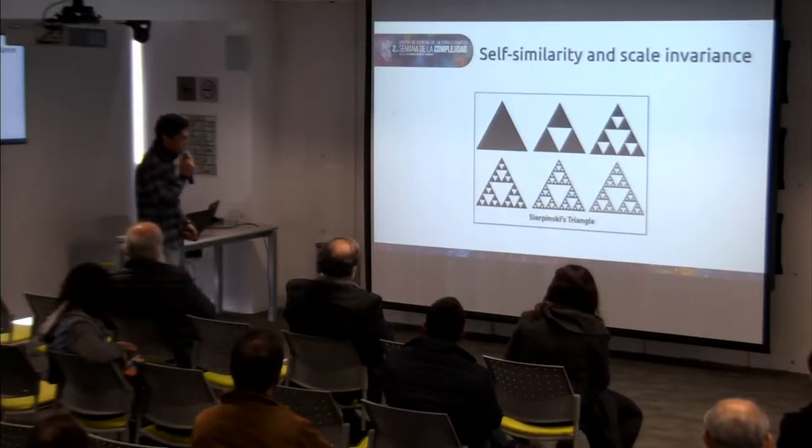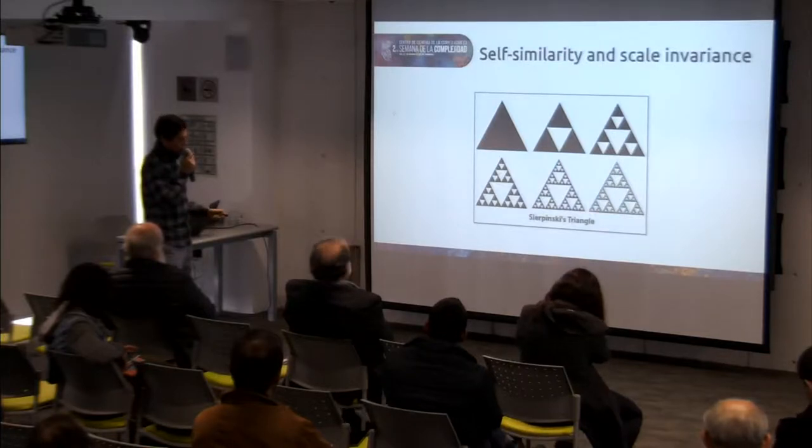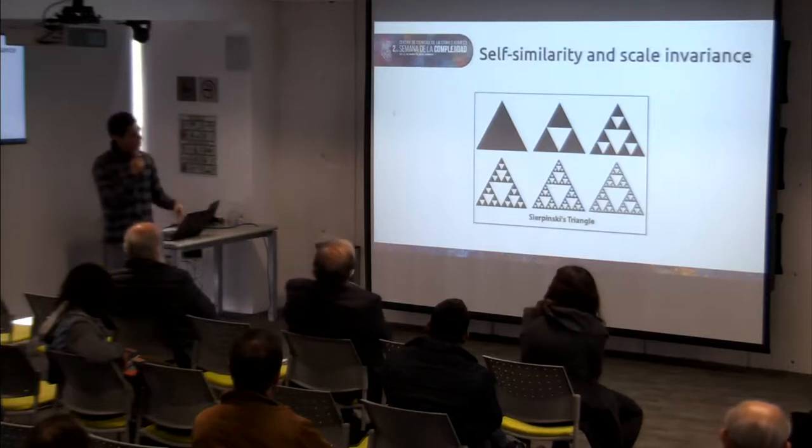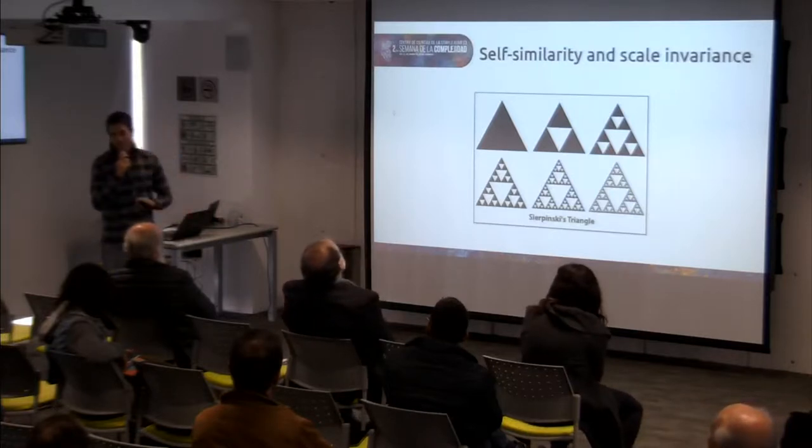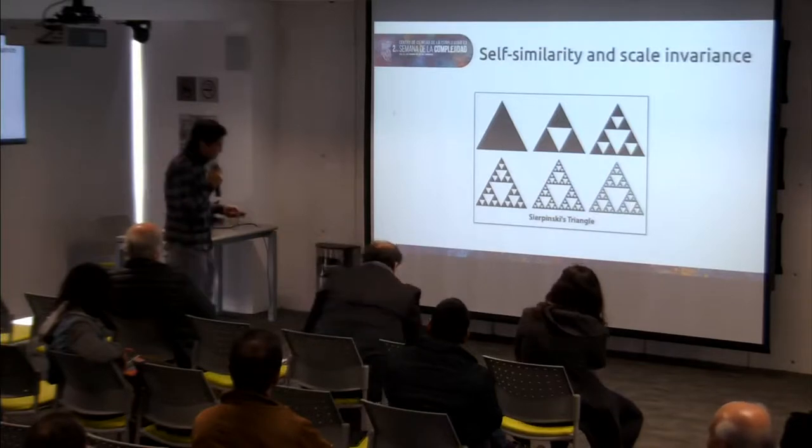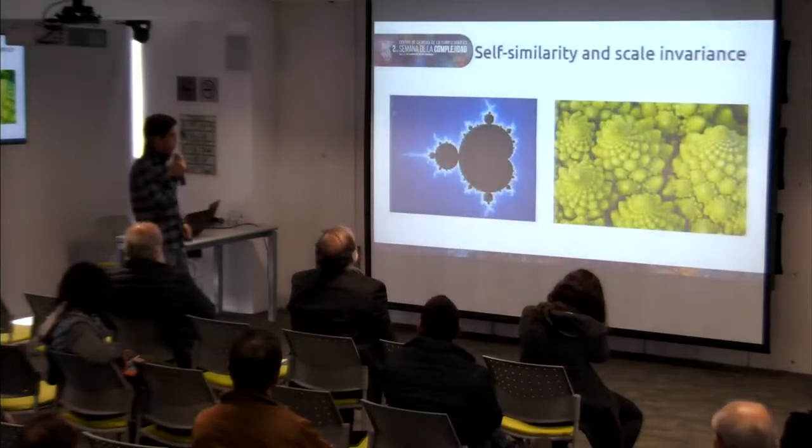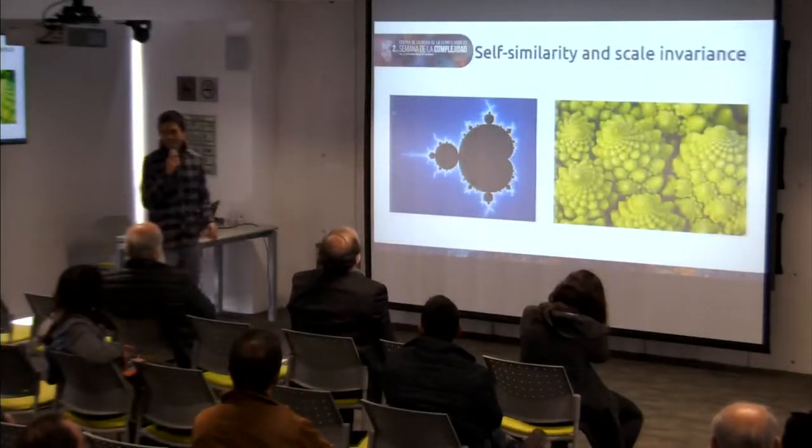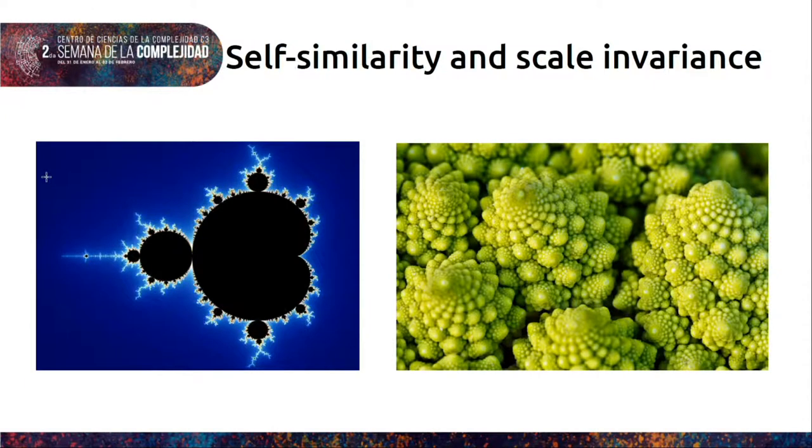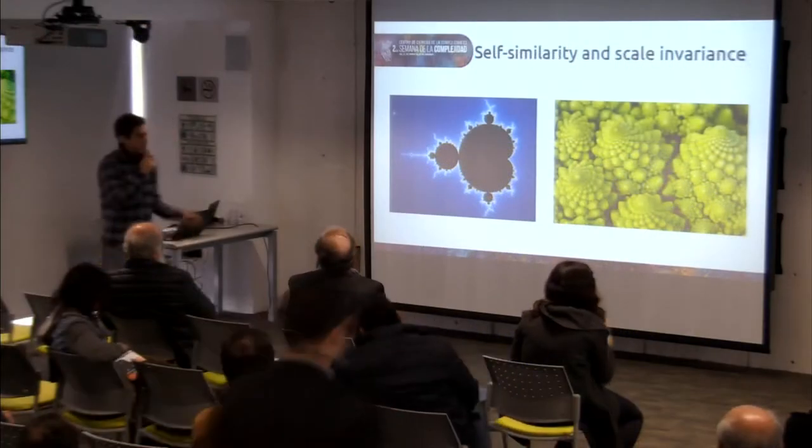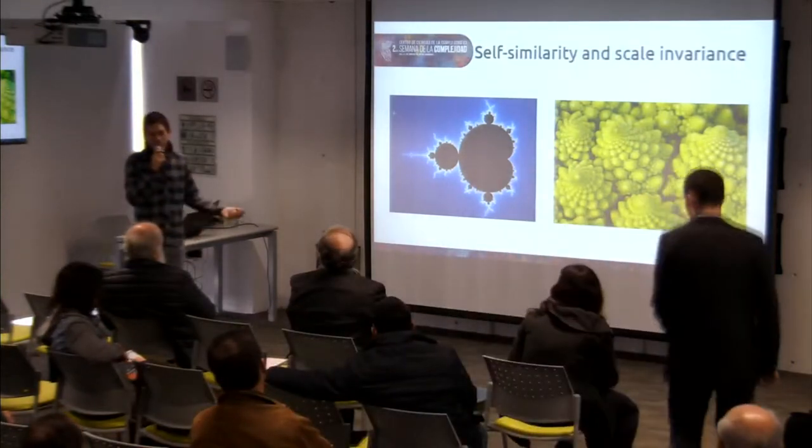And the thing is that if you do a zoom in one of these triangles, you get the same. And if you again do a zoom and zoom in and zoom in, you get the same structure. So this is something called self-similarity, and there are some more fancy fractals like this from Mandelbrot, and this is broccoli, this Romanesco, that it grows in this fractal way. I mean, it's not perfect because nature is not perfect, we are finite in some way.